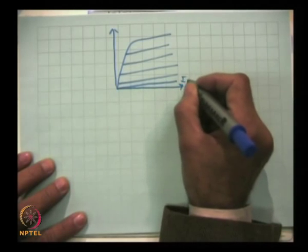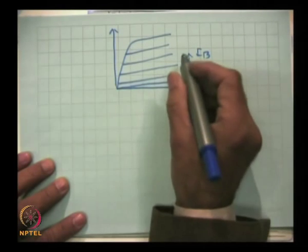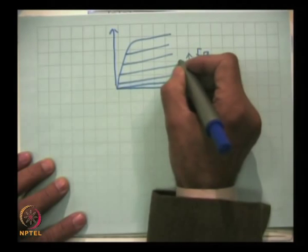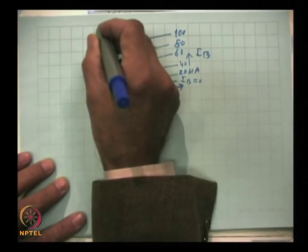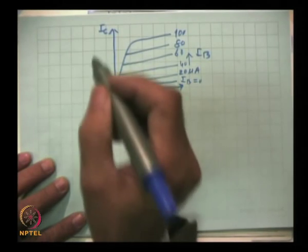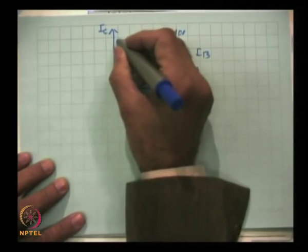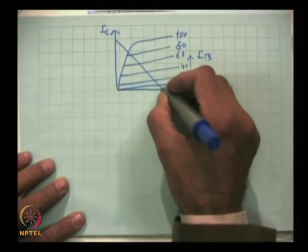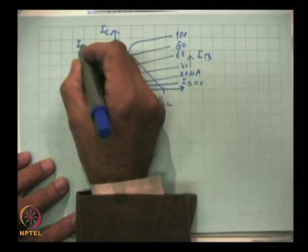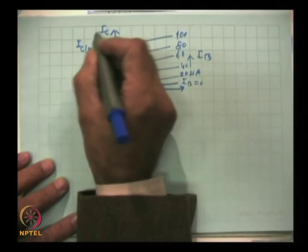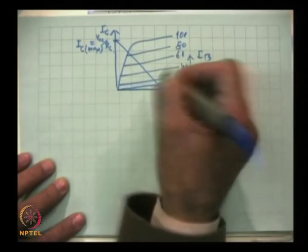On the output characteristics, I_B equals zero and increases — for example, at 20, 40, 60, 80, and 100 microamperes. This is I_C versus V_CE. The saturation region, cutoff region, and active region are visible. When the load line is drawn over this, V_CC is one endpoint and I_C(max) = V_CC / R_C is the other. This is the load line.